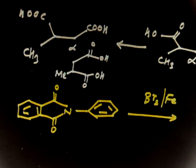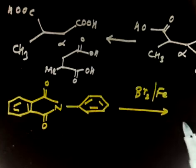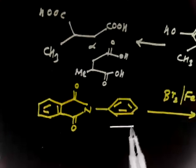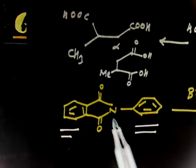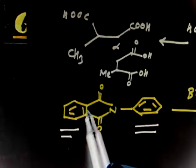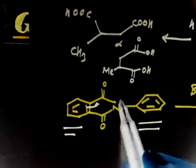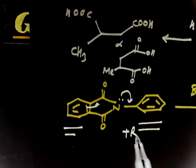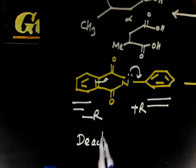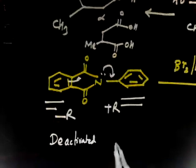So you have bromination in the presence of Fe, where Fe is acting as a catalyst. Now you have two rings. Either bromine can go in this ring or this ring. One ring is deactivated because of resonance on this side — minus R effect — so this ring is deactivated. The other ring gets activated because of plus R effect. So this ring is deactivated and this ring is activated.